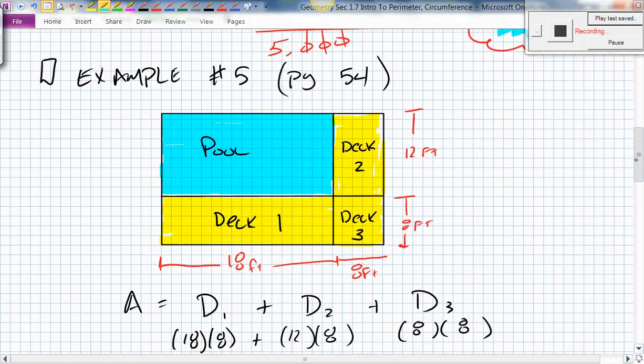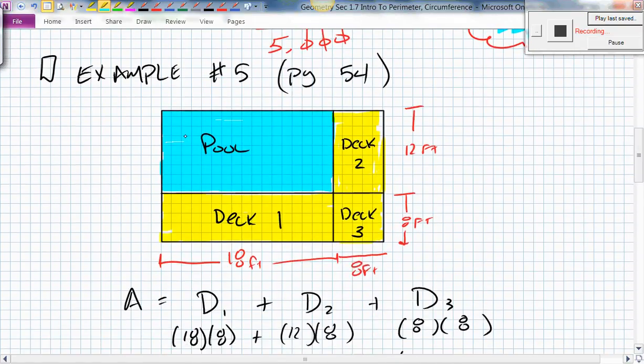Then we went on to example number five. They gave us this pool drawing. And then they said there's a couple of decks surrounding it. And we numbered the decks number one, two, and three. And then they gave us the dimensions of each deck. And you were supposed to figure out the area for that deck.